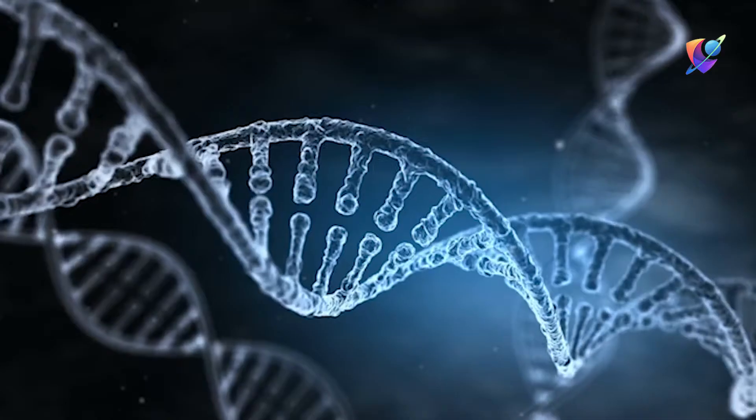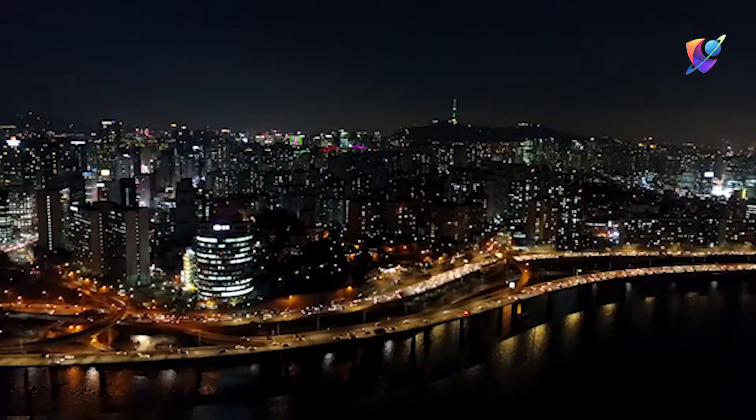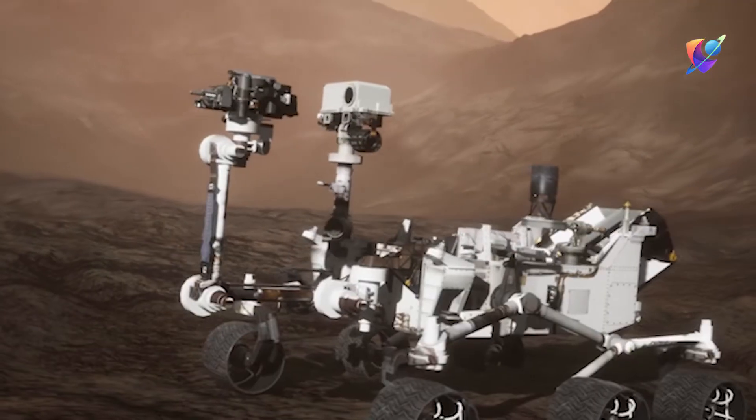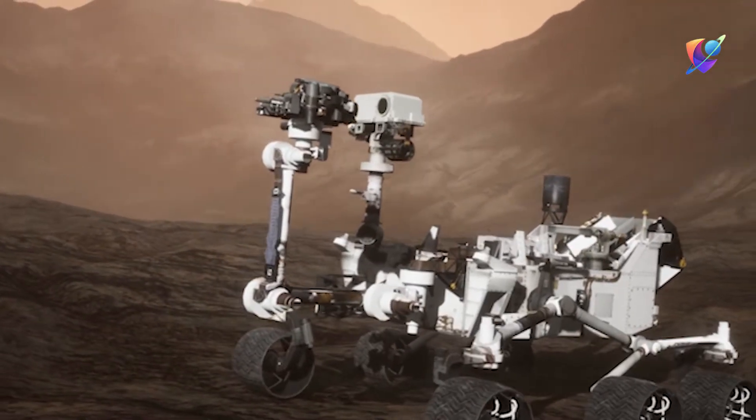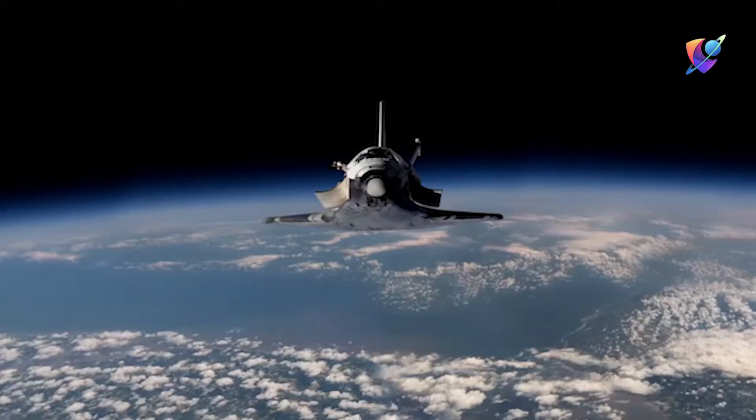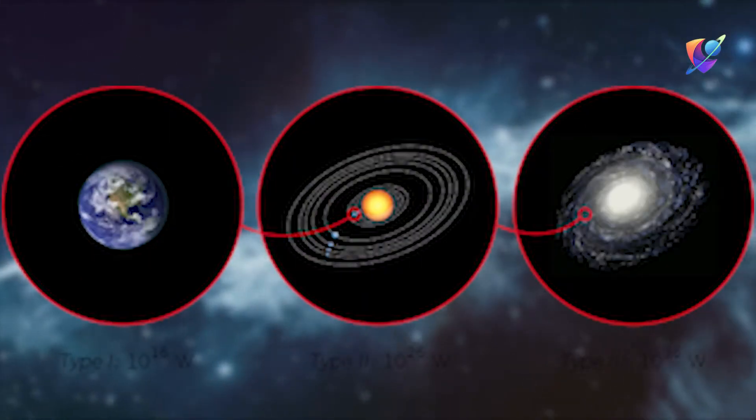We have sent astronauts to the moon, deciphered the genetic hereditary code, and invented the internet. It seems as if humanity has achieved more milestones in the past decades alone than the inhabitants of the past would ever have dared to dream. But what if all these achievements are in fact nothing more than the tiny tip of the progress iceberg? To understand what this idea is all about, we should take a look at the so-called Kardashev scale.